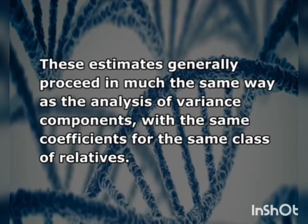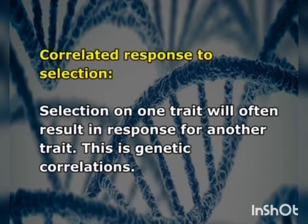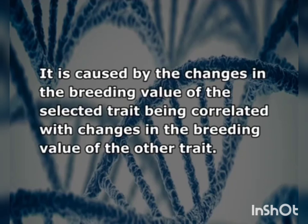These estimates generally proceed in much the same way as the analysis of variance components with the same coefficients for the same class of relatives. The estimates of correlations, being ratios, are notoriously imprecise. Selection of one trait will often result in a response in another trait — this is genetic correlation. It is caused by changes in the breeding value of the selected trait being correlated with changes in the breeding value of the other trait.